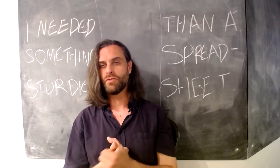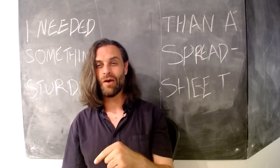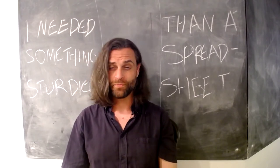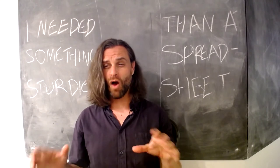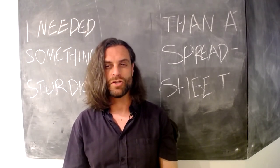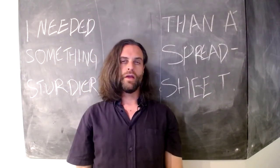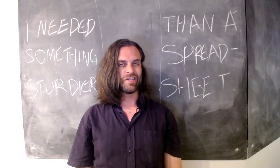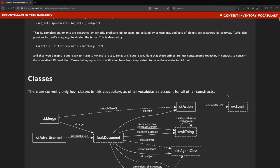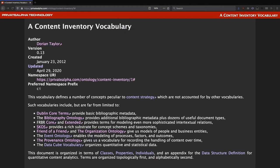I wanted to be able to ascribe types to the content, which are largely taken care of by other ontologies. I also wanted to record quantitative properties of documents, including counts of features like images, tables and forms, links in, links out, and statistics about the text. And finally, I wanted to be able to model audiences for documents for the purpose of doing automated partitioning of the content. In a lot of ways, this ontology is a shim that glues together a bunch of more versatile and comprehensive ontologies.